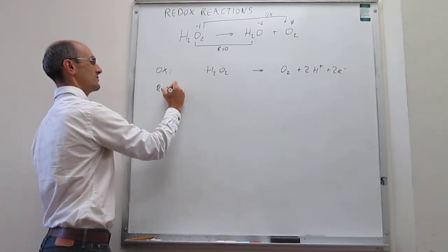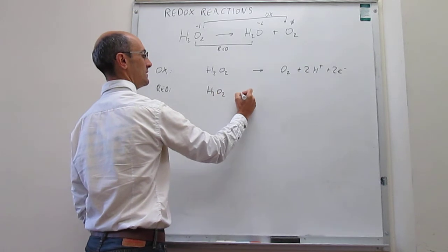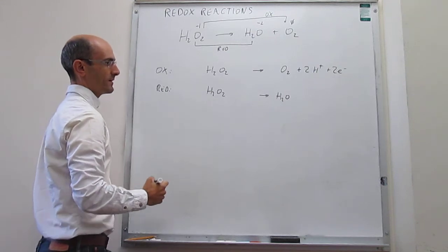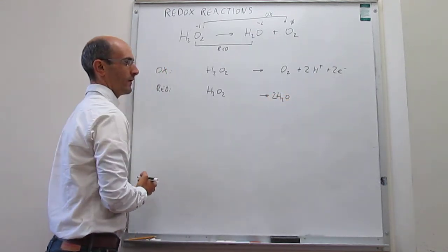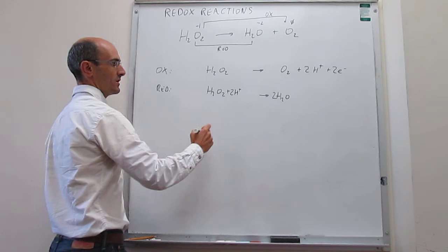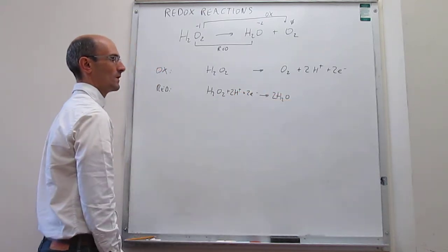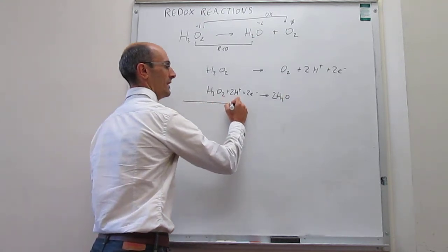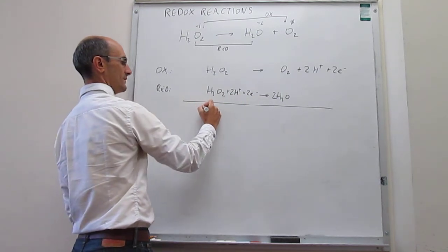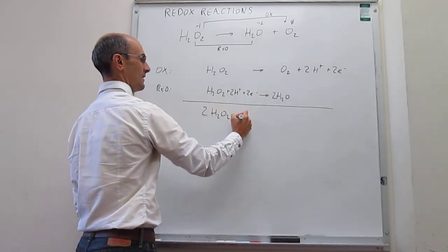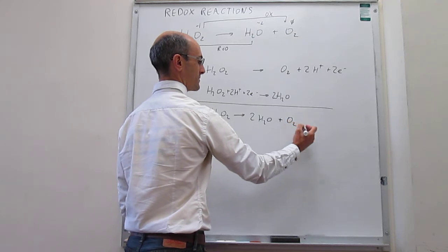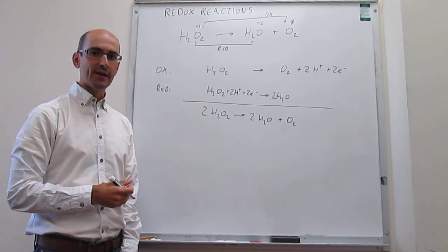The reduction half-reaction is hydrogen peroxide going to water. The oxygens are not balanced, so we add a coefficient of two in front of water. The hydrogens are then not balanced, so we add two protons. To balance the charge, we add two electrons. Adding both half-reactions together, the protons and electrons cancel, giving us two hydrogen peroxides generating two water molecules and one molecule of oxygen — exactly what we expected.